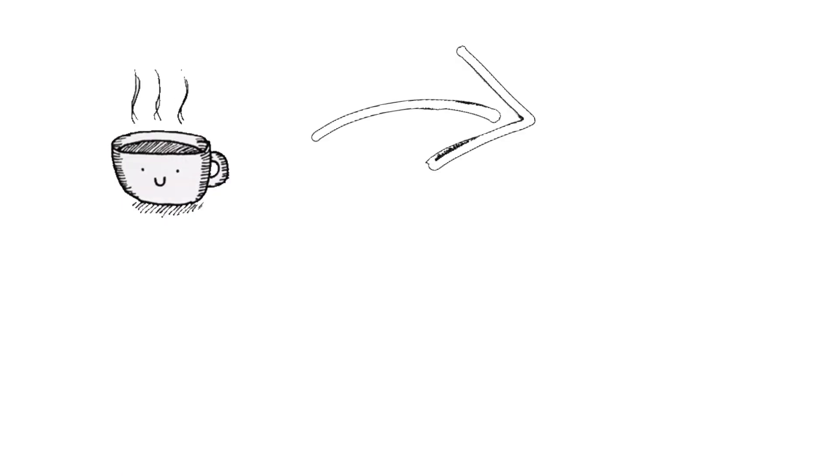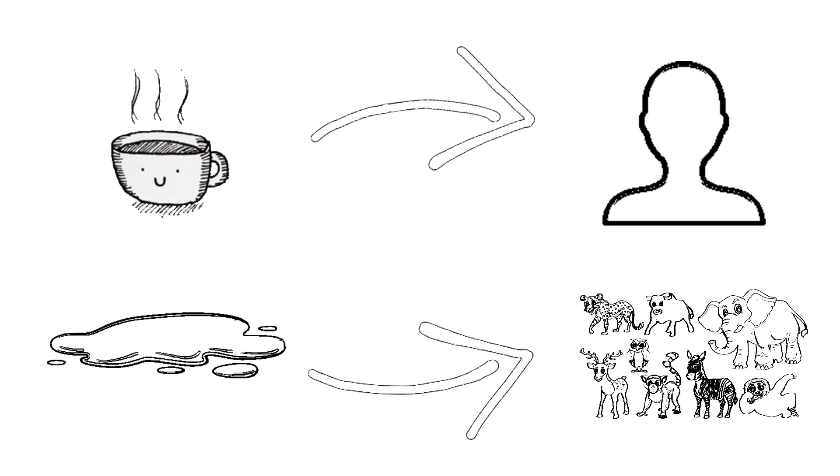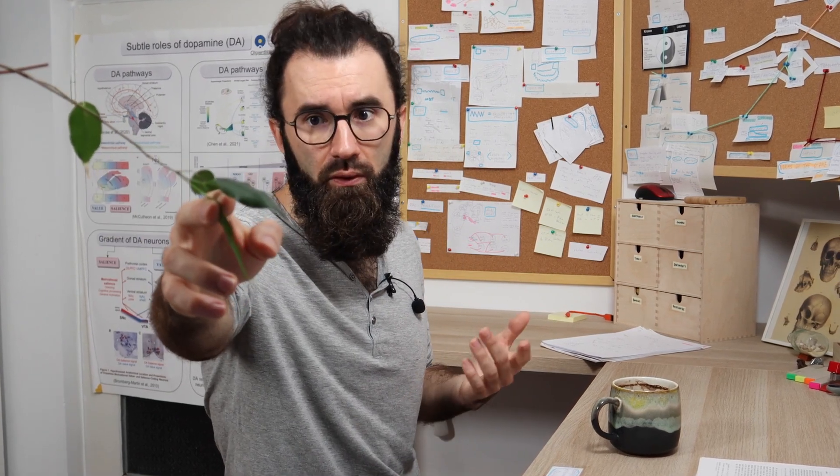What are affordances? A cup allows drinking, but usually only to its owner. A puddle, for drinking, but mostly for animals. A little branch allows support, but only for ant-sized animals. These are examples of affordances. Affordances are subjectively perceived opportunities for actions, given your body schema, trained movements, or general context.